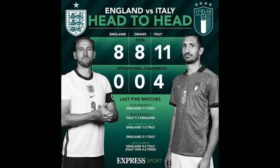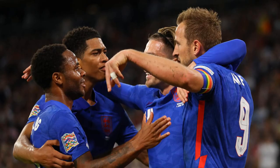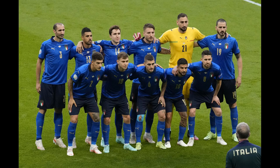Reece James gets a game at right back, while AC Milan's Fikayo Tomori is finally handed a chance to start. West Ham midfielder Declan Rice partners James Ward-Prowse in the middle of the park, while Jack Grealish and Raheem Sterling line up alongside Tammy Abraham in attack. Starting England's 3-4-3.